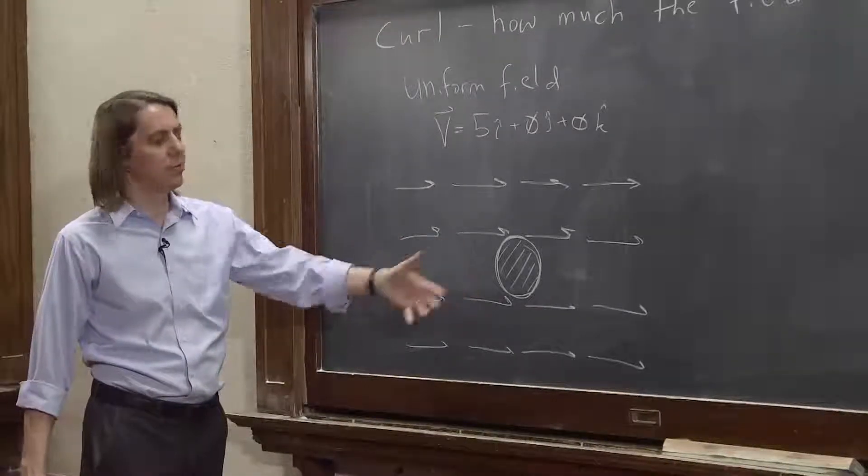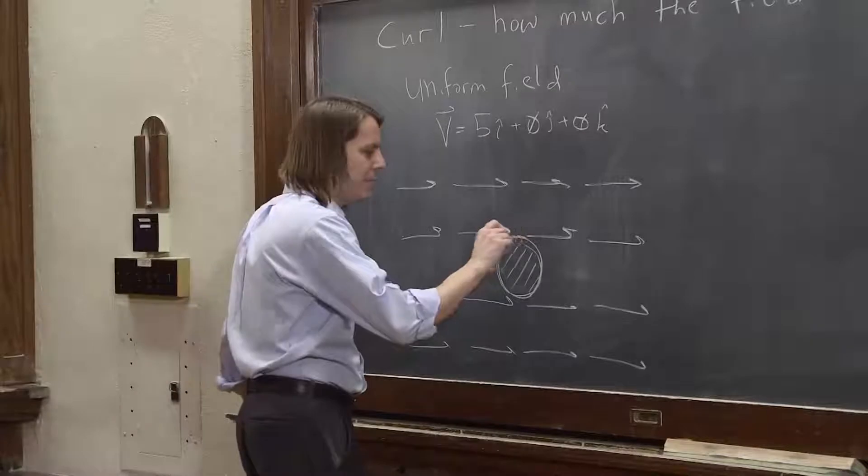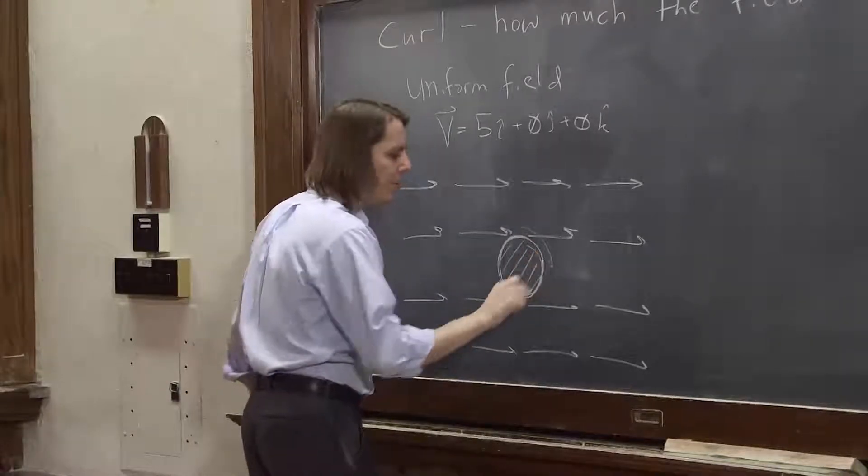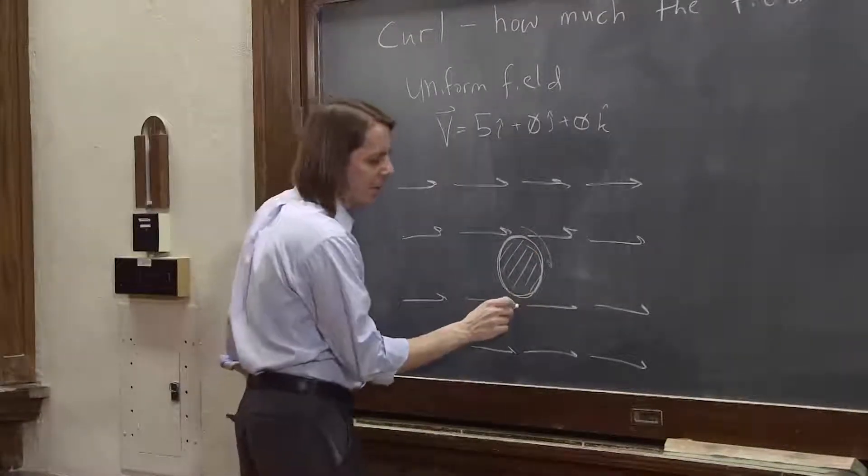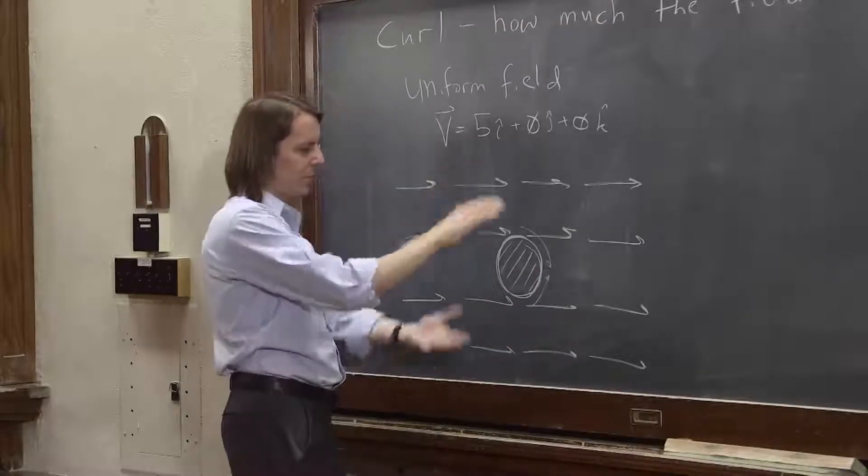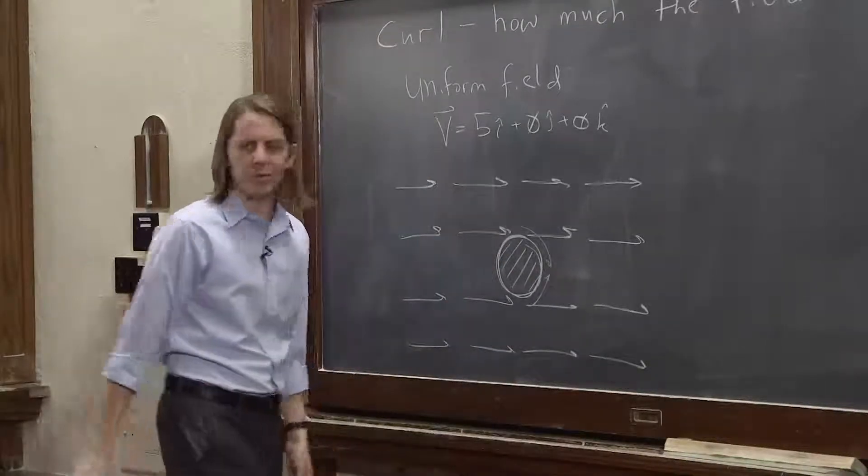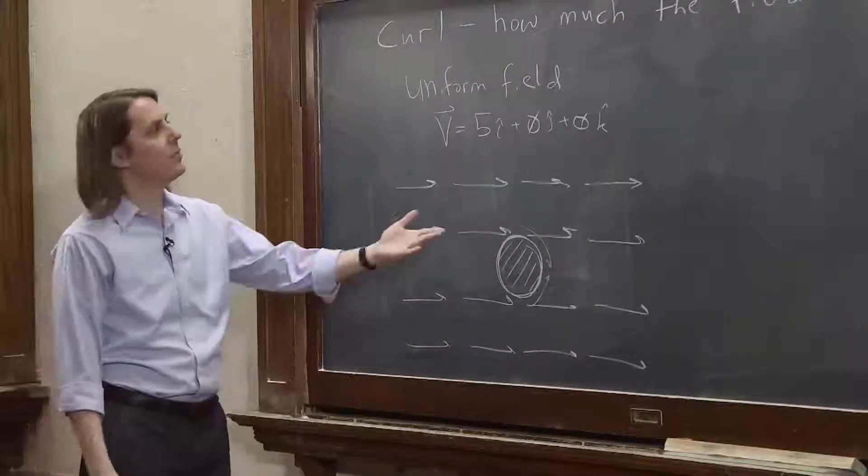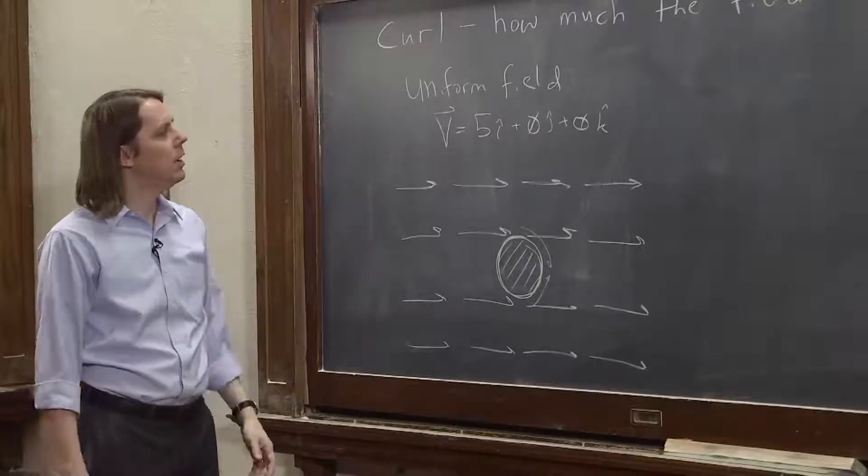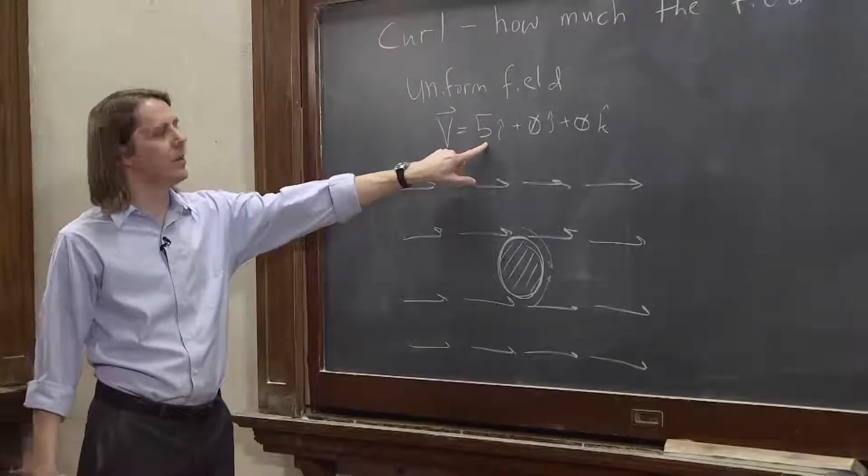Here you would say this doesn't look like it's going to twist. It has some vectors on this side kind of making it want to go around that way. It has some vectors on this side kind of making it want to go around that way. And since it's symmetric, they're equal and opposite, and they're just going to cancel out. So here I would say it doesn't appear to have any curl.